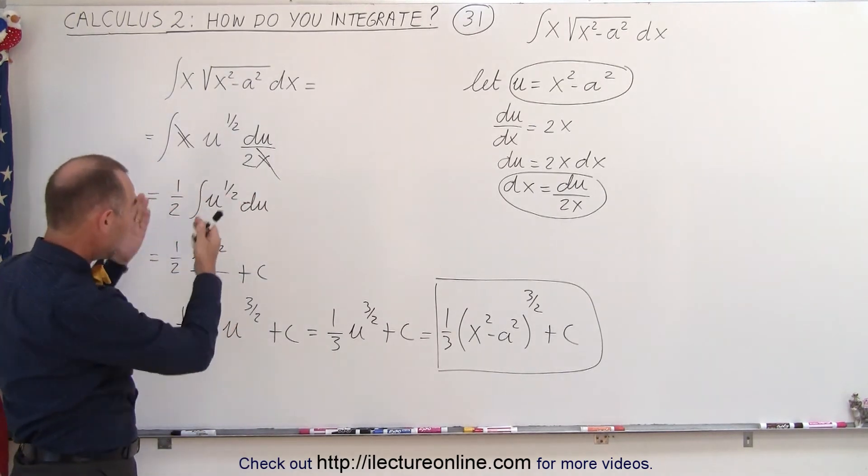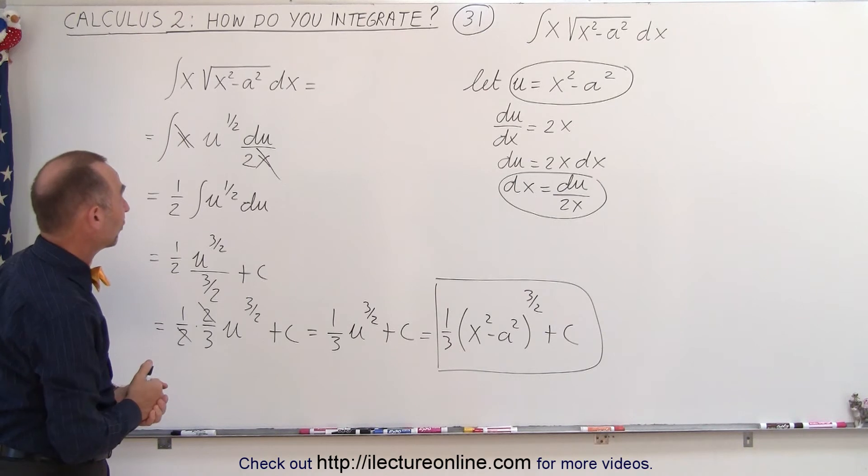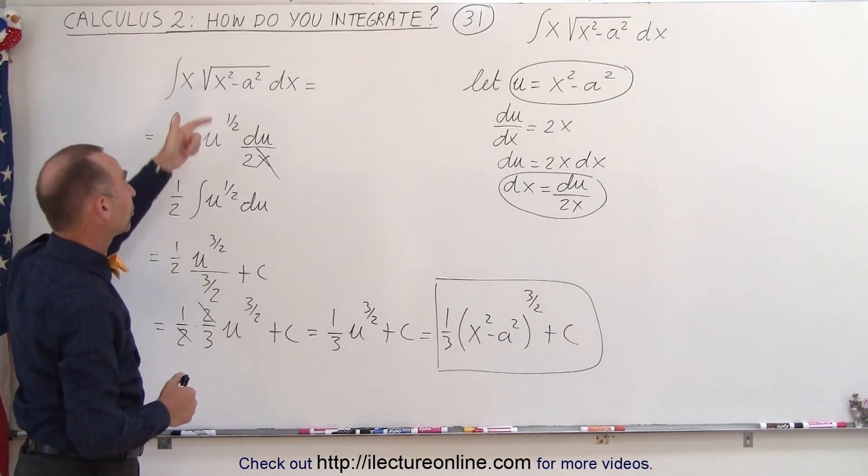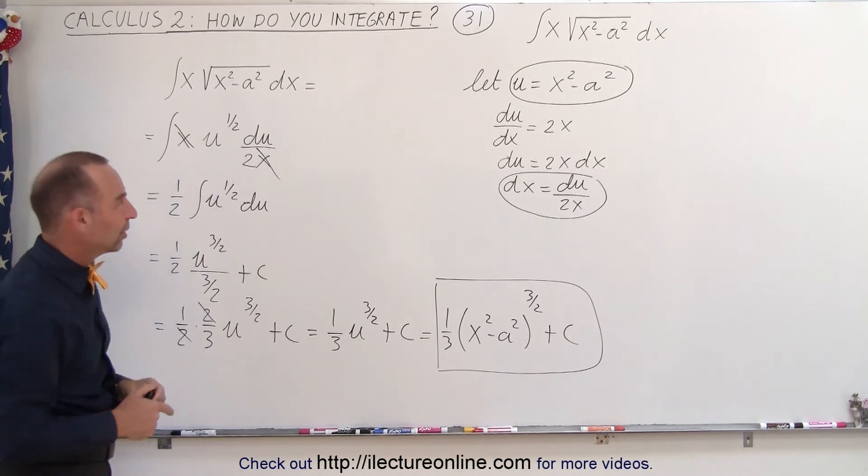So notice, it becomes actually quite easy using the method of substitution to find that. A different story when it's 1 over x times the square root of x squared minus a squared, which we'll see in the future video.